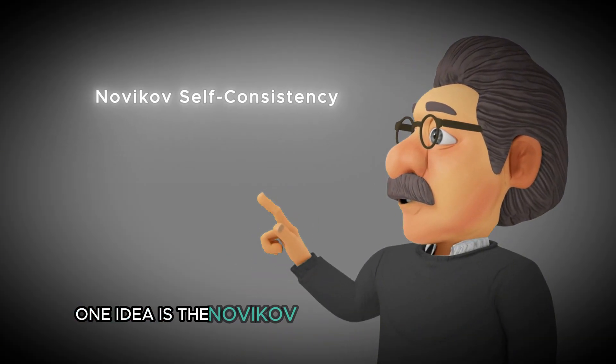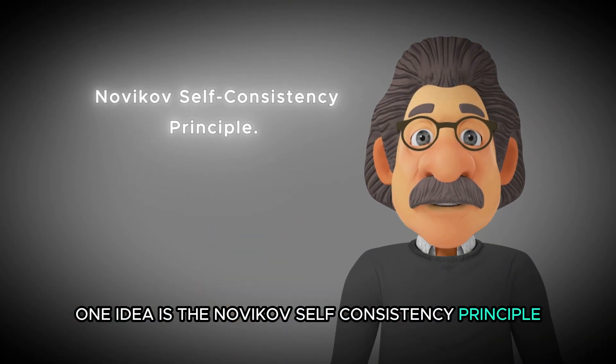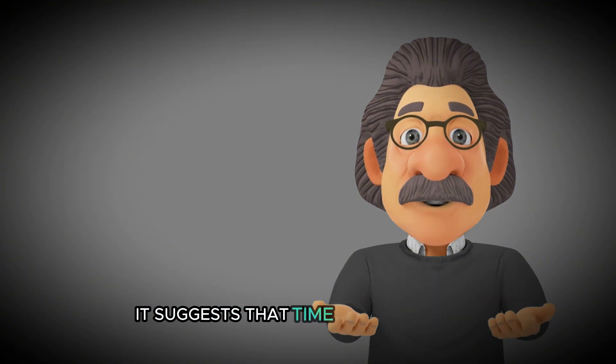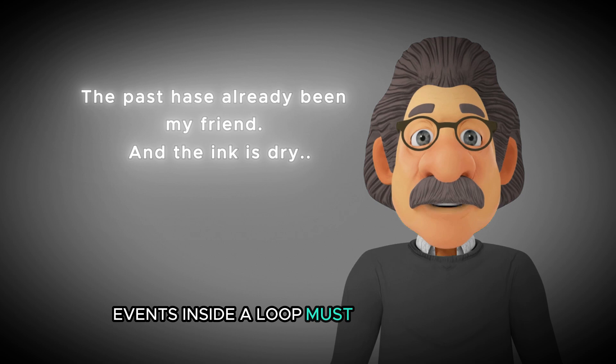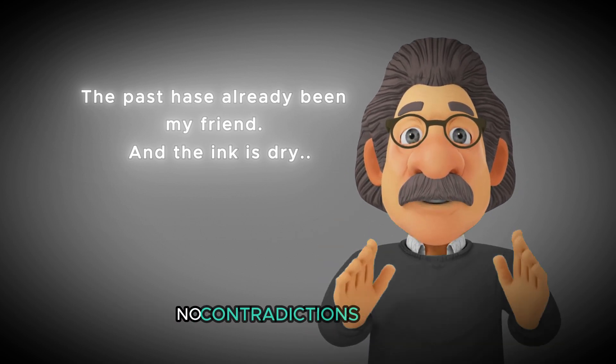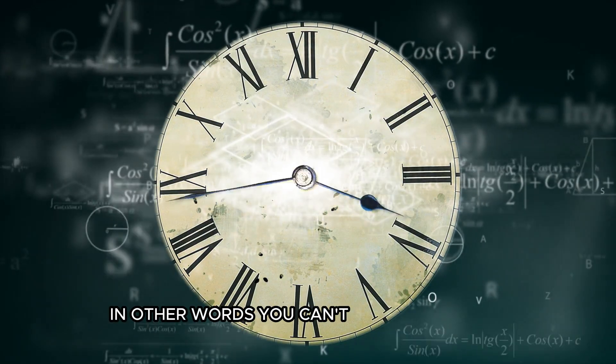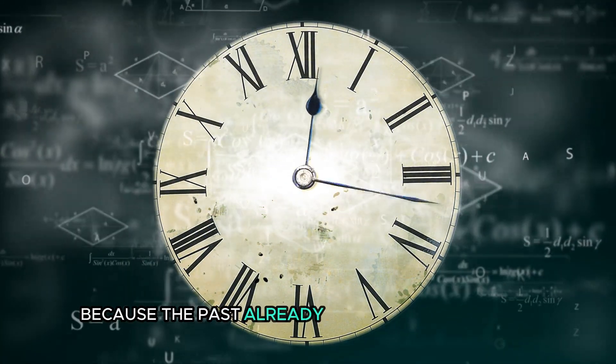One idea is the Novikov self-consistency principle. It suggests that time corrects itself. Events inside a loop must align perfectly. No contradictions allowed. In other words, you can't change the past because the past already includes your actions.